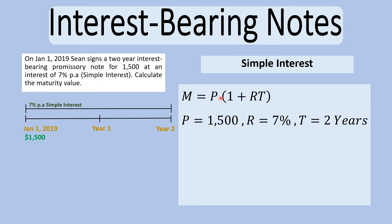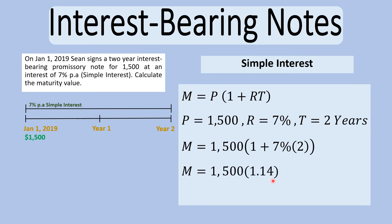Plugging in: P = $1,500, r = 7%, t = 2 years. We get 1 + (0.07 × 2) = 1.14, multiplied by $1,500 gives a maturity value of $1,710. Breaking it down: at end of year one, $1,500 × 7% = $105; at end of year two, another $105. So $1,500 + $105 + $105 = $1,710.